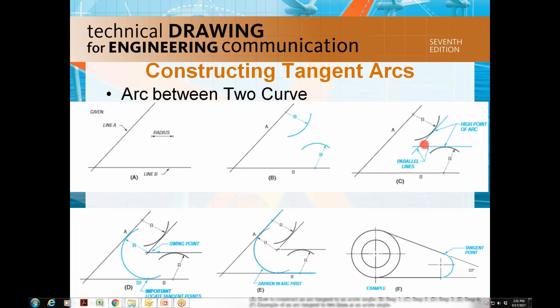Once you have created the two parallel lines, you will have one intersection point, and that will be your swing point. Then you are going to swing one arc from one tangent point to the other tangent point.